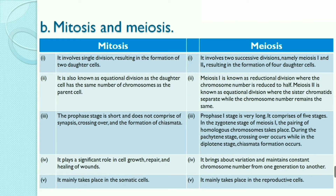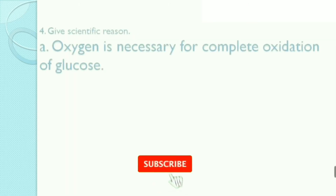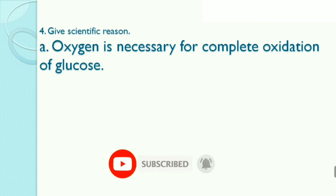Meiosis brings about variations and maintains constant chromosome number from one generation to another. Mitosis mainly takes place in somatic cells; meiosis mainly takes place in reproductive cells. Third, aerobic and anaerobic respiration: aerobic respiration involves complete breakdown of glucose into CO2 and water; anaerobic involves partial breakdown. Aerobic respiration yields a net gain of 36 ATP molecules; anaerobic respiration yields only two ATP molecules. Oxidation of NADH is vigorous in aerobic and slow in anaerobic respiration.